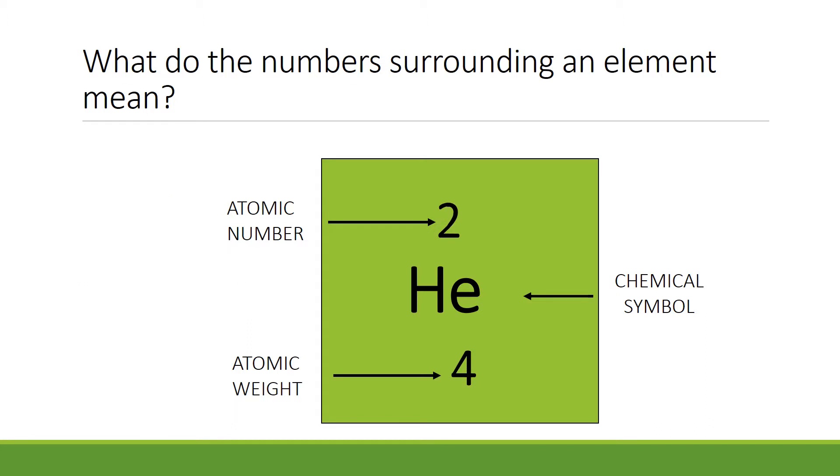Here is the element helium, taken from the periodic table. The chemical symbol for helium is capital H, small case E. The atomic number is the smaller number and the atomic weight is the larger number. So the atomic number is 2 and the atomic weight for helium is 4.